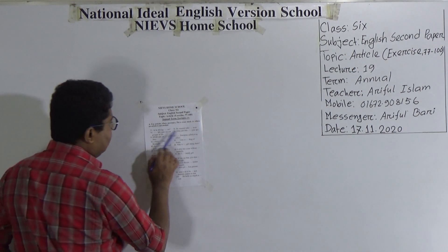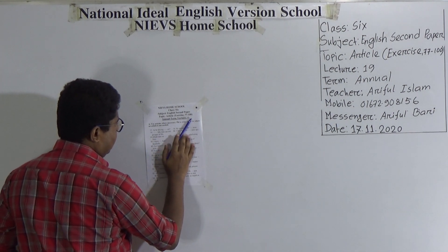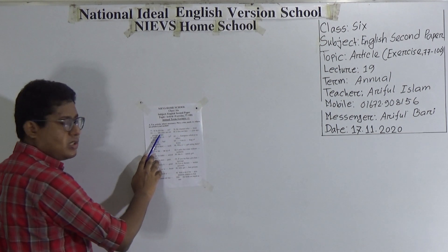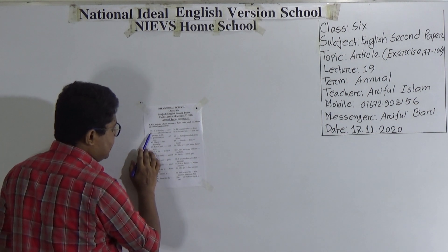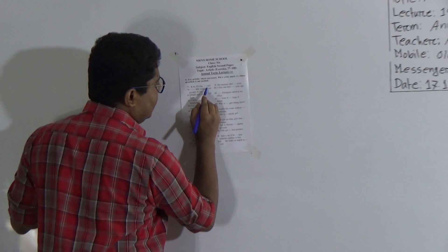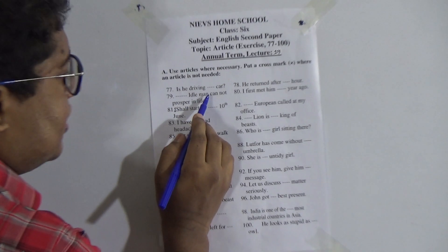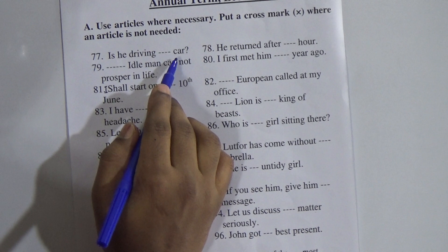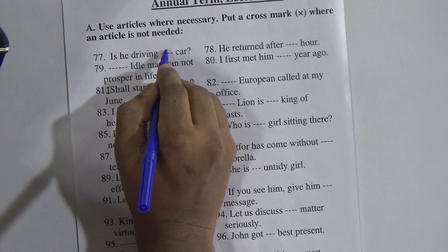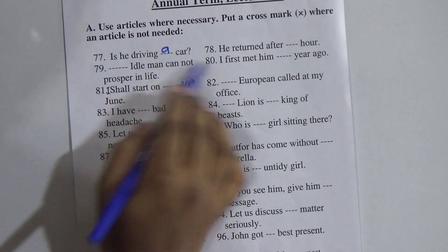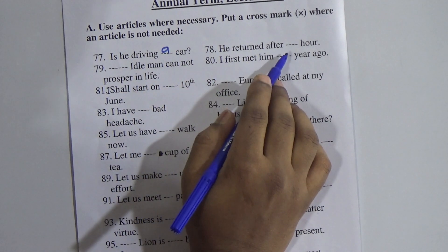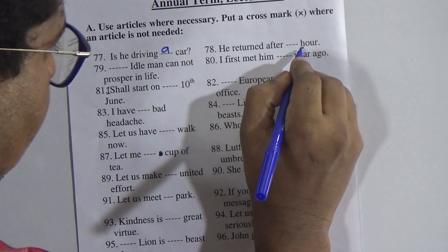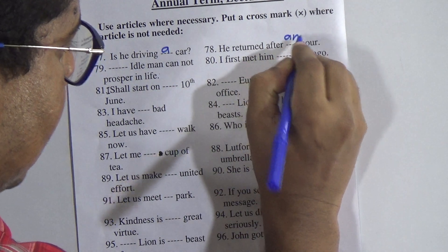Lecture 19, topic Article, Exercise 77 to 100. Use articles where necessary; put a cross where an article is not needed. Number 77: 'Is he driving ___ car?' We don't know what car he is driving, we don't know the name of the car, so this is indefinite. That's why we put 'a' here: 'Is he driving a car?' 78: 'He returned after ___ hour.' We pronounce 'our', not 'ace' — the 'h' is silent. So we put 'an' here.